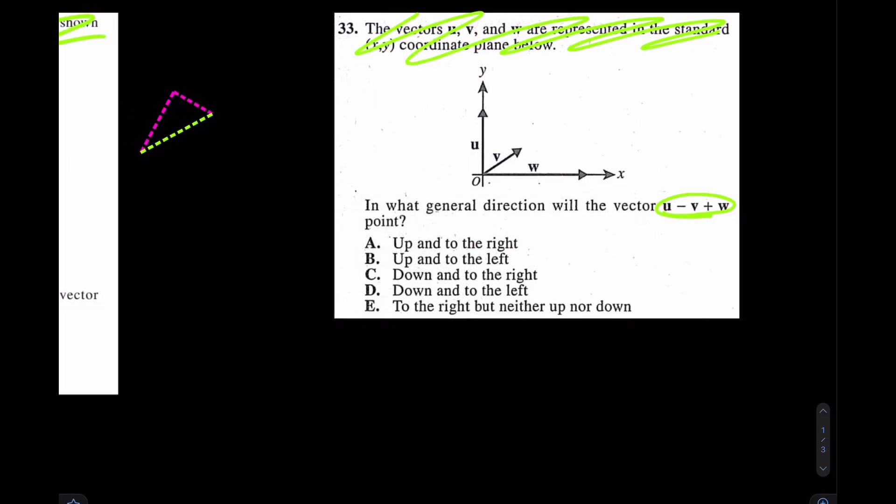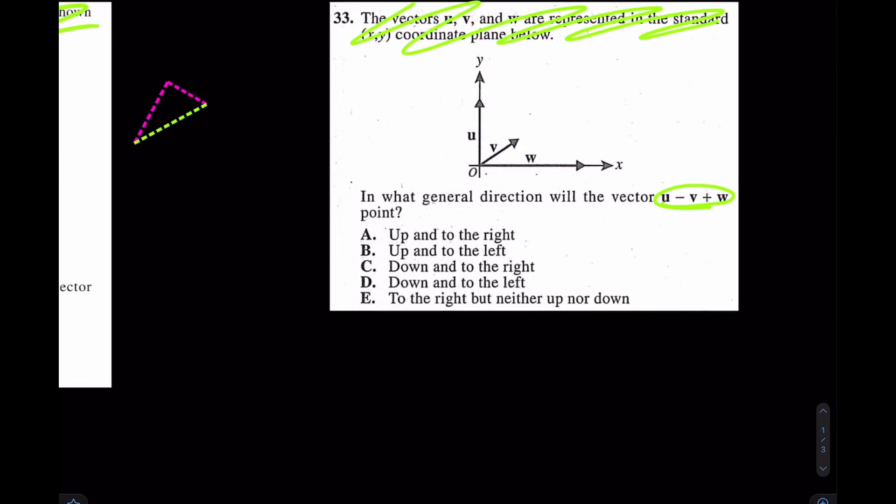I'll use my dotted line here. u minus v. I go u. Then I go minus v. If this is v in the positive direction, what's going to be v in the negative direction?